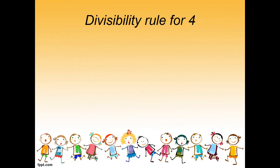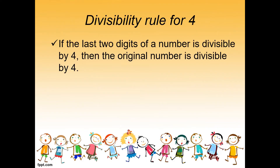So first rule: divisibility rule for 4. If the last two digits of a number is divisible by 4, then the original number is divisible by 4. Meaning, if the two digits at the end divide evenly by 4, the whole number is divisible by 4 no matter how large it is.